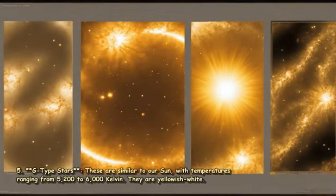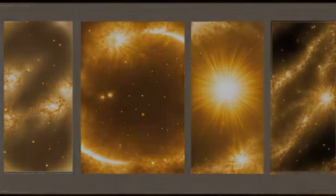5. G-type stars: These are similar to our sun, with temperatures ranging from 5,200 to 6,000 Kelvin. They are yellowish-white.